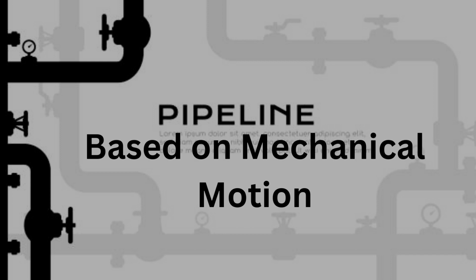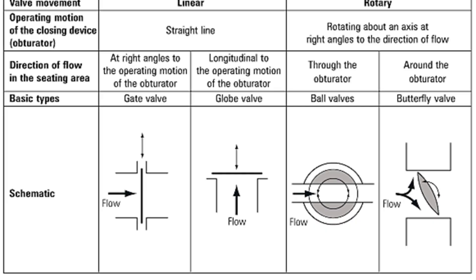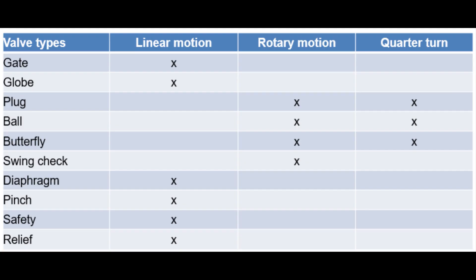Based on motion, valves are majorly classified into three types: 1. Linear motion valve, 2. Rotary motion valve, 3. Quarter turn valves. Linear motion valves are those in which the closure member — as in gate, globe, diaphragm, pinch, and lift-check valves — moves in a straight line to allow, stop, or throttle the flow. Rotary motion valves are those where the closure member travels along an angular or circular path, as in butterfly, ball, plug, eccentric, and swing-check valves. Quarter turn valves are rotary motion valves that require approximately a quarter turn (0 through 90 degrees) of the stem to go from fully closed to fully open, or vice versa.